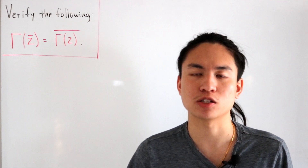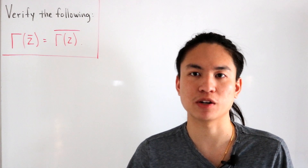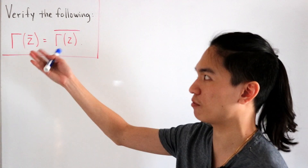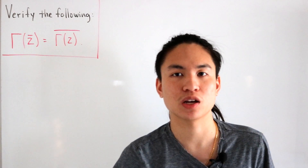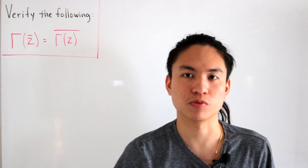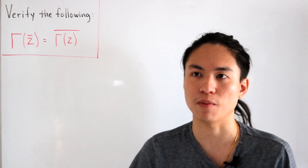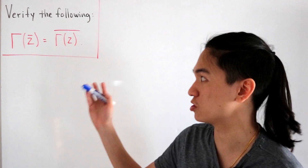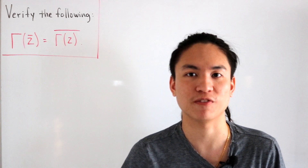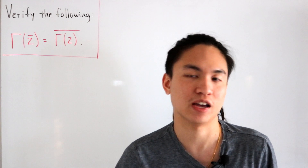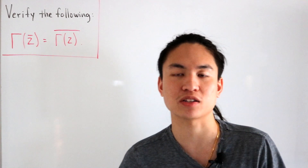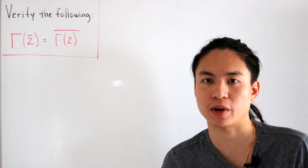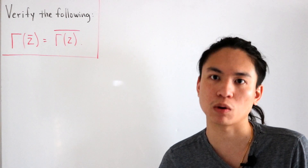It's pretty straightforward because it just uses the properties of complex conjugates. This is a very simple verification, but it's going to be done in two ways. So let's start off with the most direct way, and that is by using the integral representation.